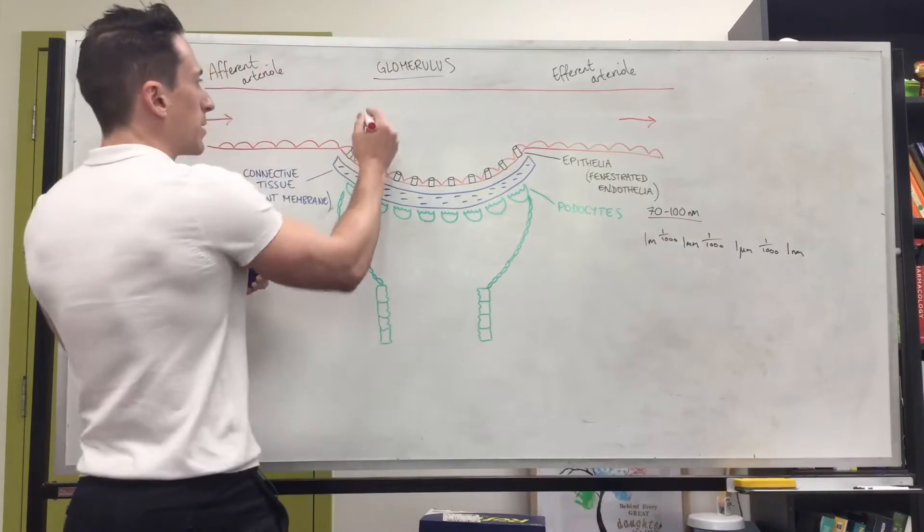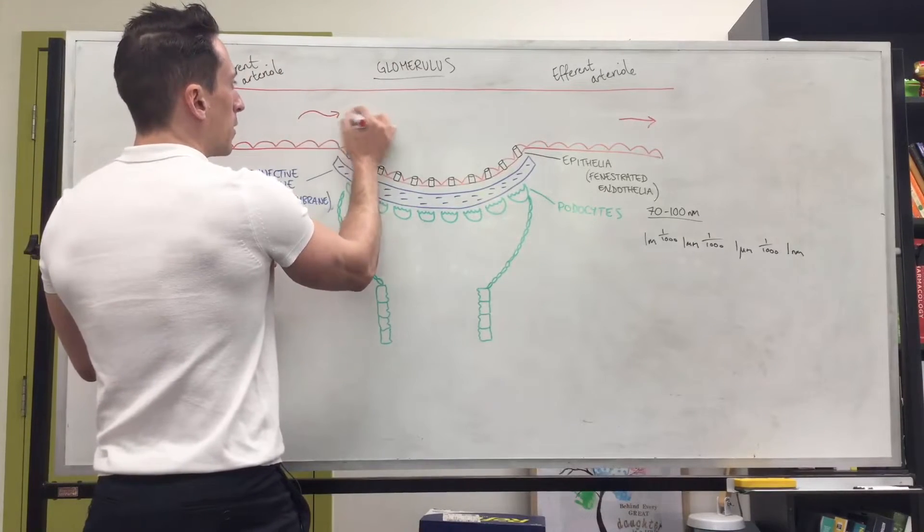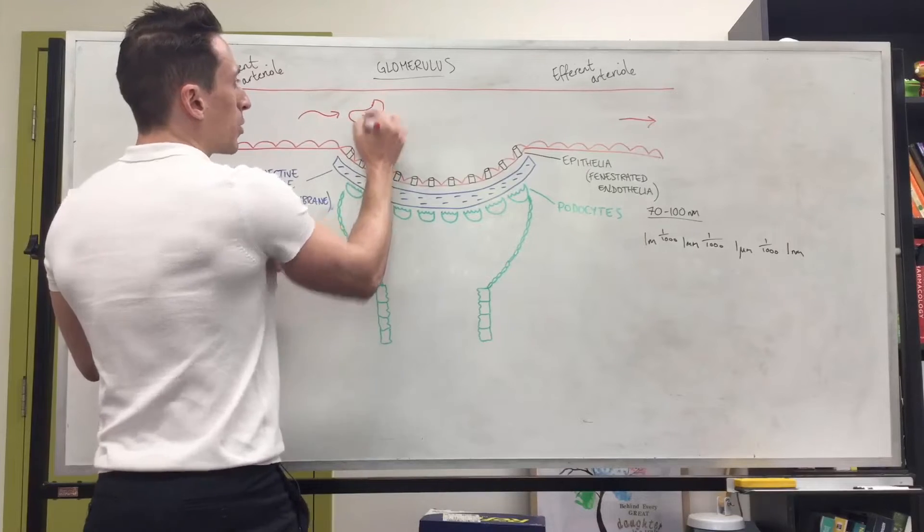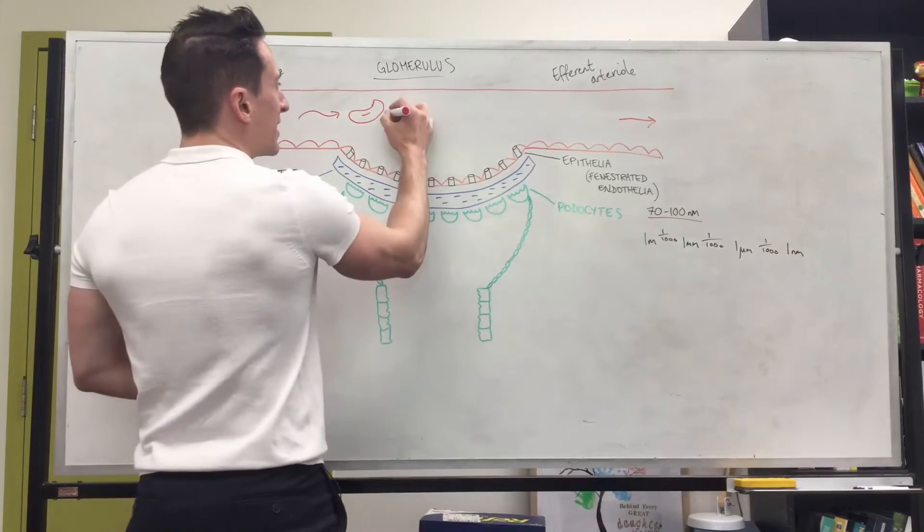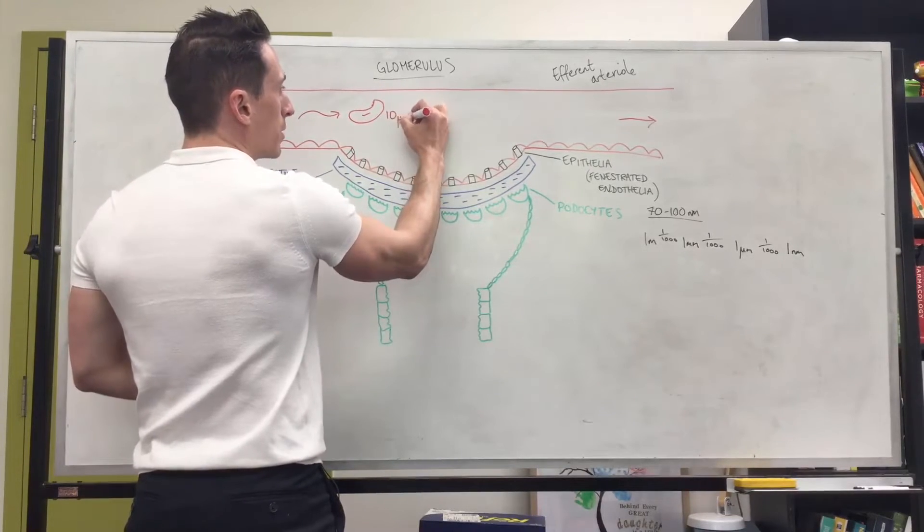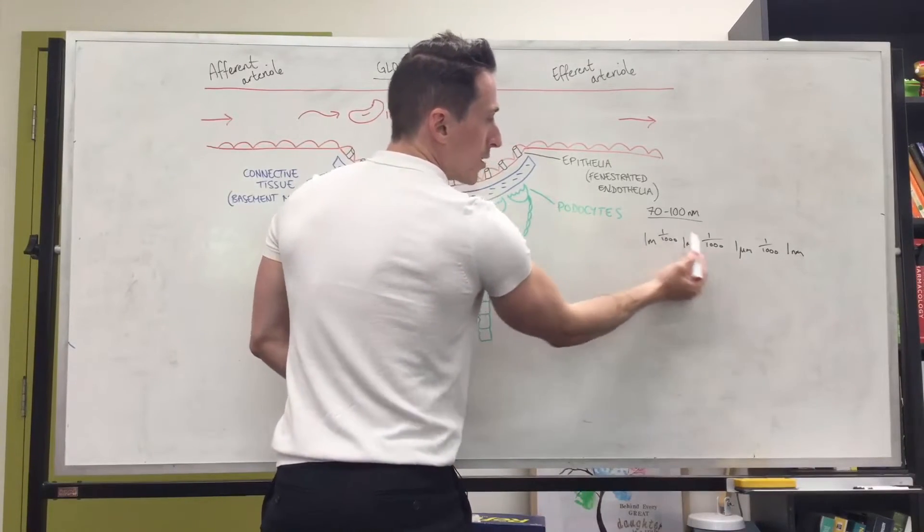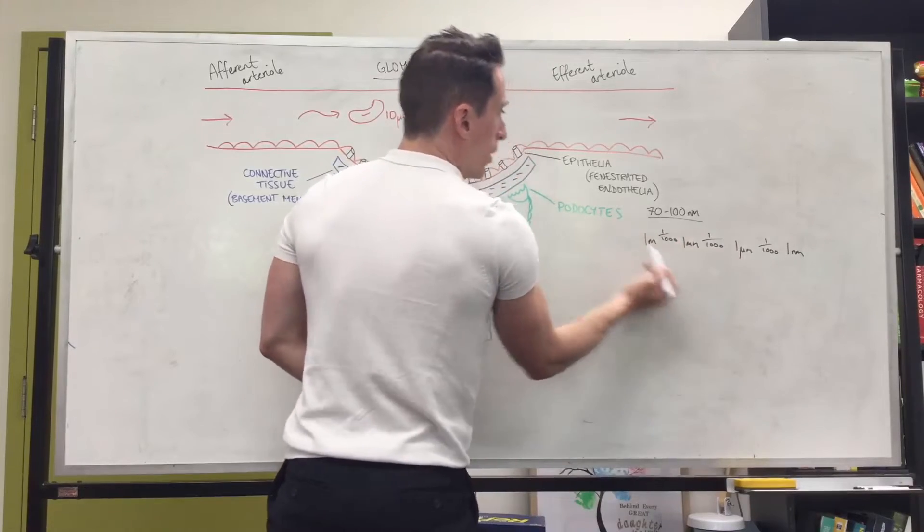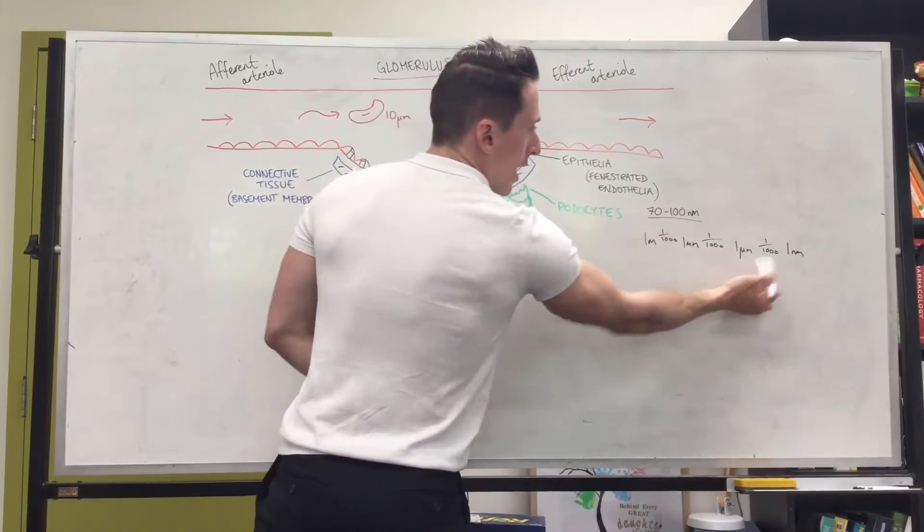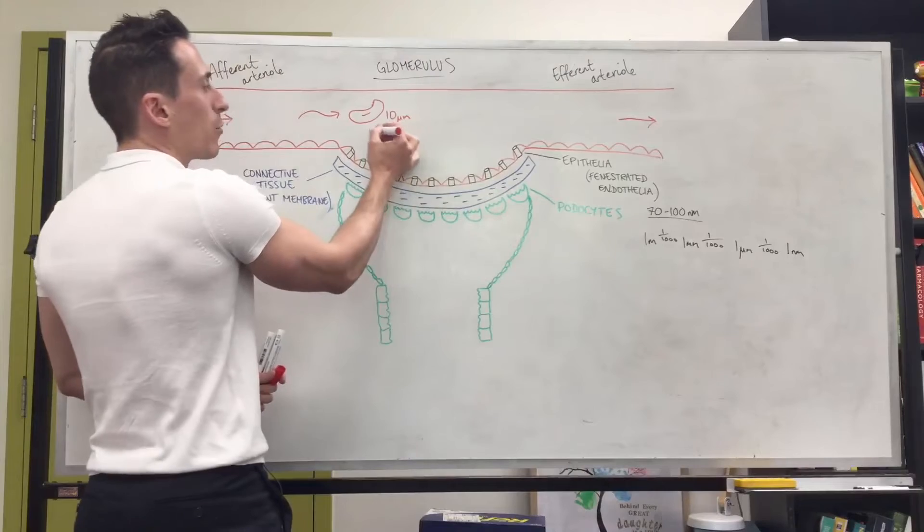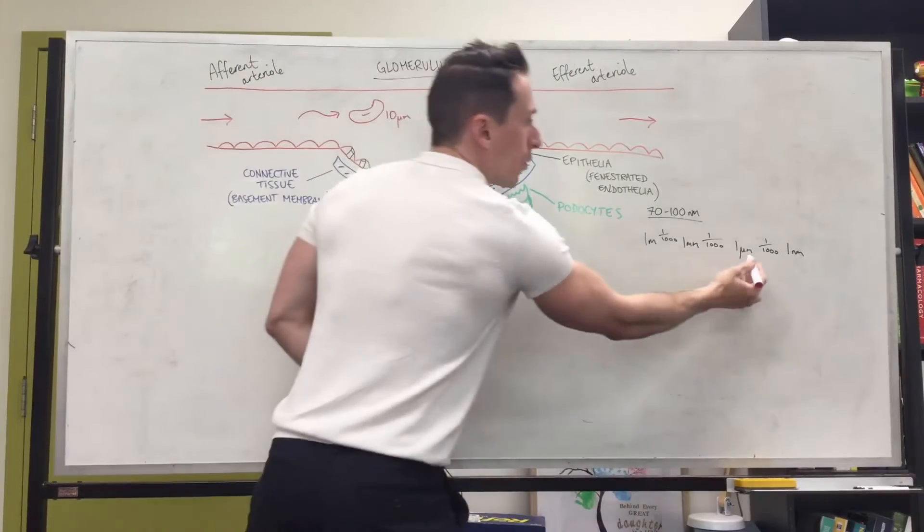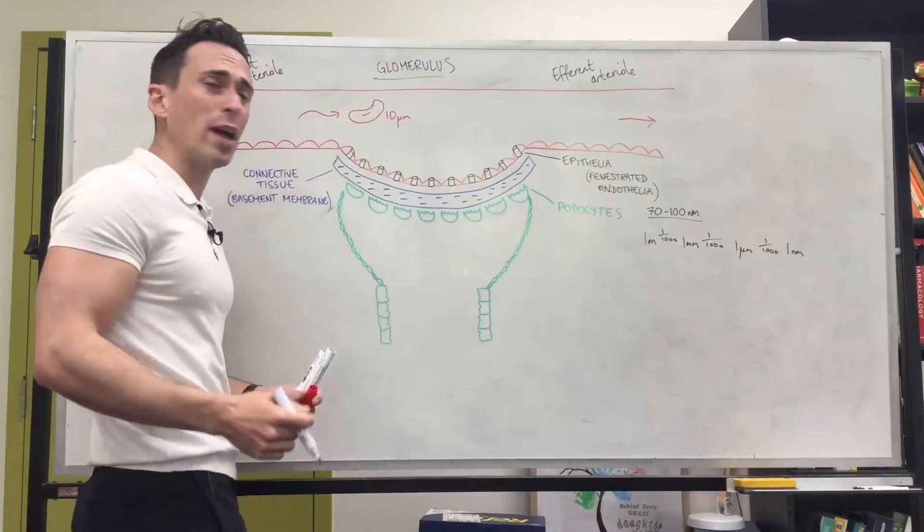Let's think about red blood cells going past. How big is a red blood cell? They're pretty small. They're 10 micrometers. That's here though. 10 micrometers means it's way too big to get through. This is 100 nanometers and a red blood cell is 10 micrometers. So it's way too big to get through.